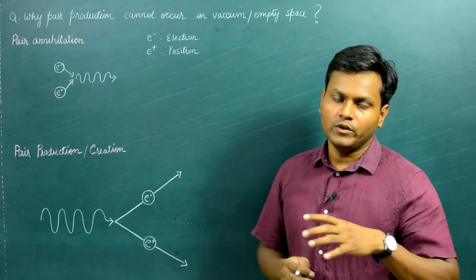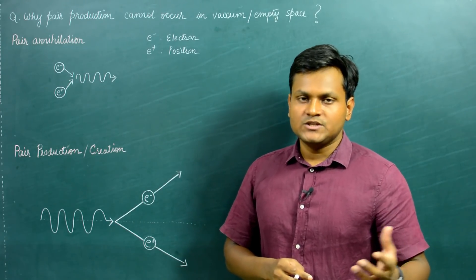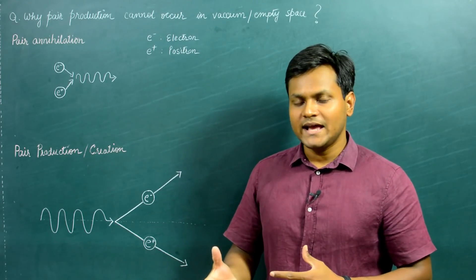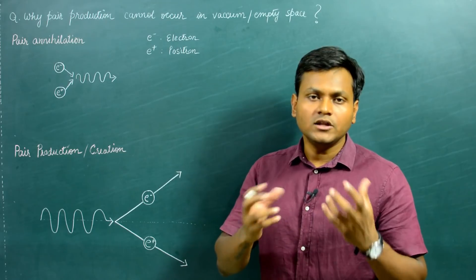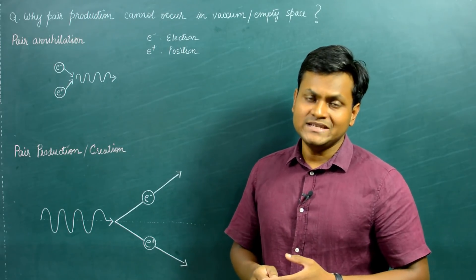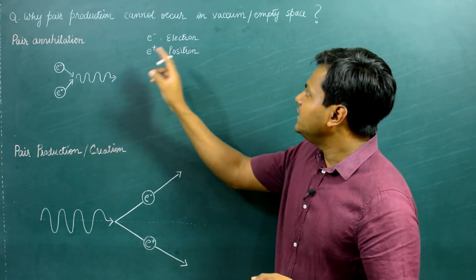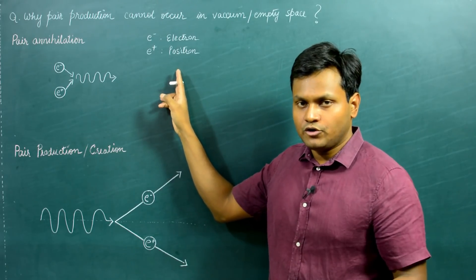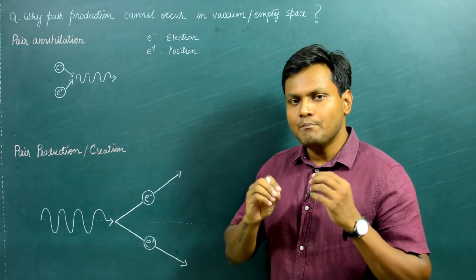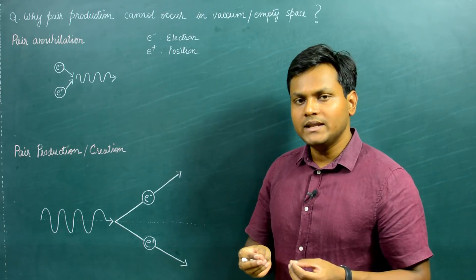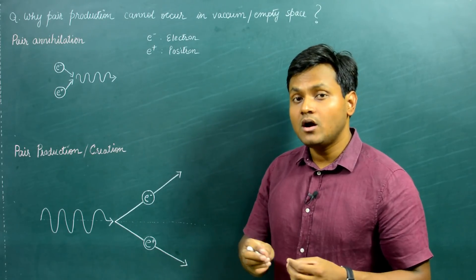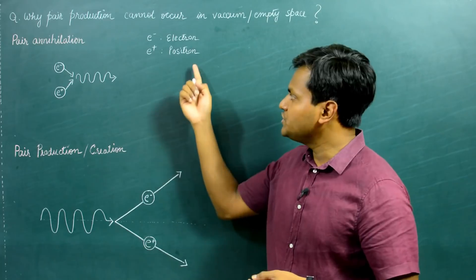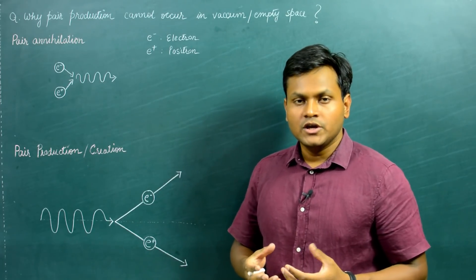An antiparticle is a particle which has the same mass as the original particle, but other properties could be different. For example, the electron has an antiparticle known as an anti-electron or a positron. The positron has the same mass as the electron, but its charge is exactly the opposite — the electron is negatively charged but the positron is positively charged.